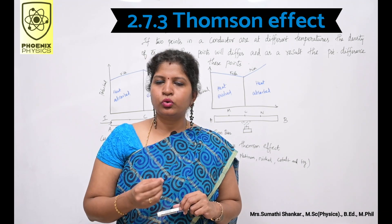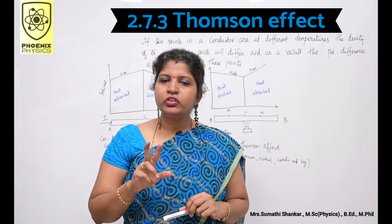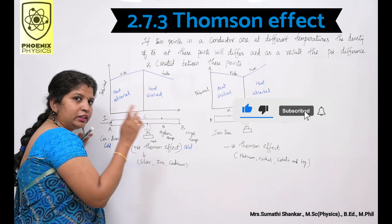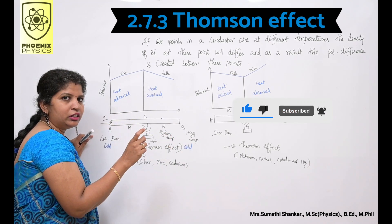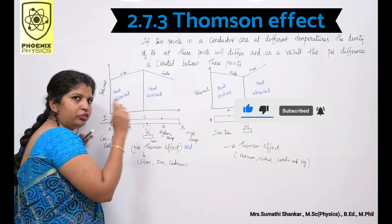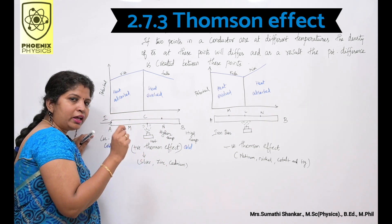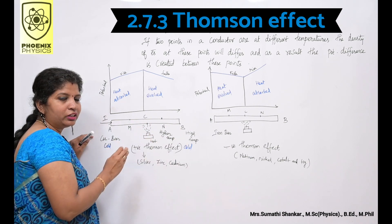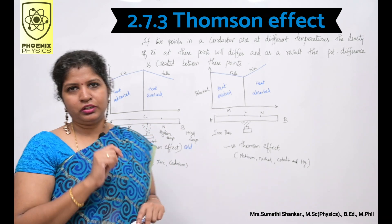Thomson showed that if two points in a conductor are at different temperature, the electron density at these points will differ and as a result a potential difference is created between these points. This is known as Thomson effect.